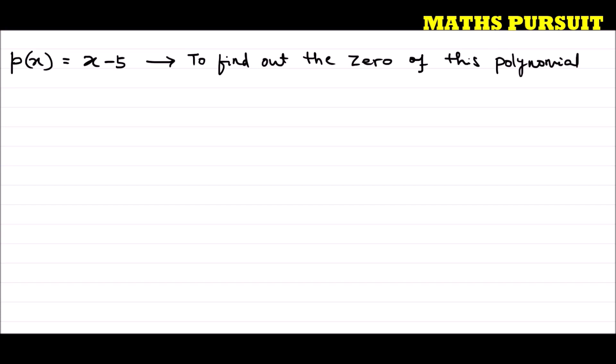So what does it mean by finding out the zero of the polynomial? That means we need to find out when p(x) will be zero.